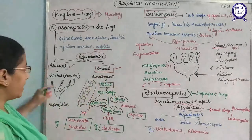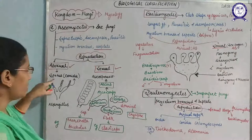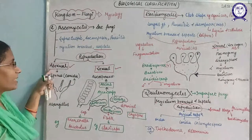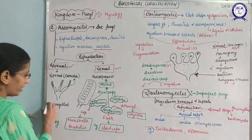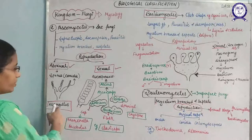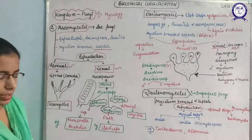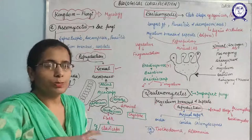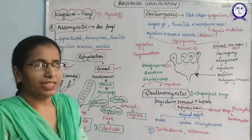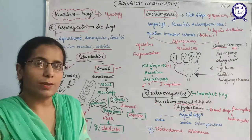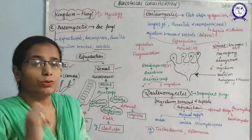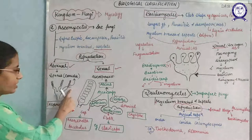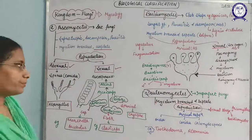Asexual as well as sexual reproduction takes place in Ascomycetes. Asexual reproduction occurs by spore formation — these spores, such as conidia and ascospores, are produced exogenously in asexual reproduction. For example, in Aspergillus, spores are produced exogenously. Spores produced from the outer surface of the fruiting body are exogenous; spores produced from inside the fruiting body are endogenous. Conidia are produced exogenously.